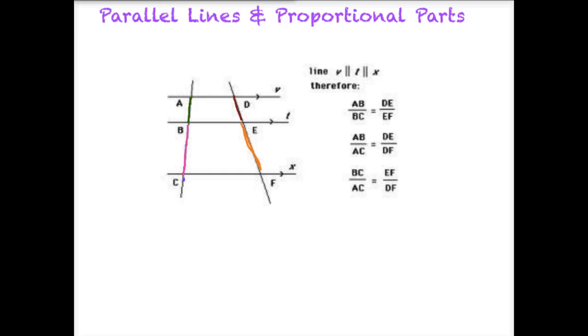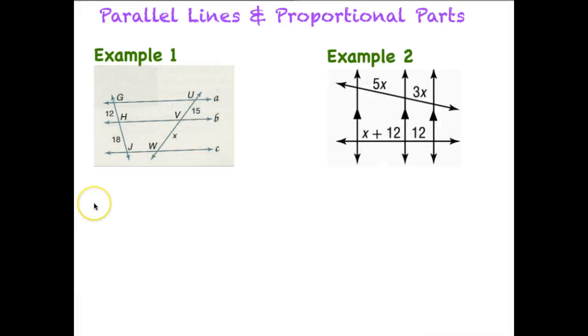Let's try a couple of examples using parallel lines. In our first example, we have 12 here, 8 here, 15, and then X. So obviously we want to solve for X. Well, we'll assume that all three of these lines are parallel, and let's set up a proportionality statement. We could say that this piece, 12, compared to 18, will be in the same proportion, or equal to 15, compared to X.